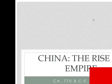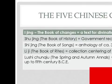China: The Rise to Empire, 770 BCE to 220 CE. The Five Chinese Classics: the Yijing (Book of Changes), a text for divination; the Shujing (Book of History), government records; the Shijing (Book of Songs), an anthology of approximately 300 poems; the Liji (Book of Rites), a collection centering on rules of conduct; and the Chunqiu (Spring and Autumn Annals), commentary on events up to the 5th century BCE.